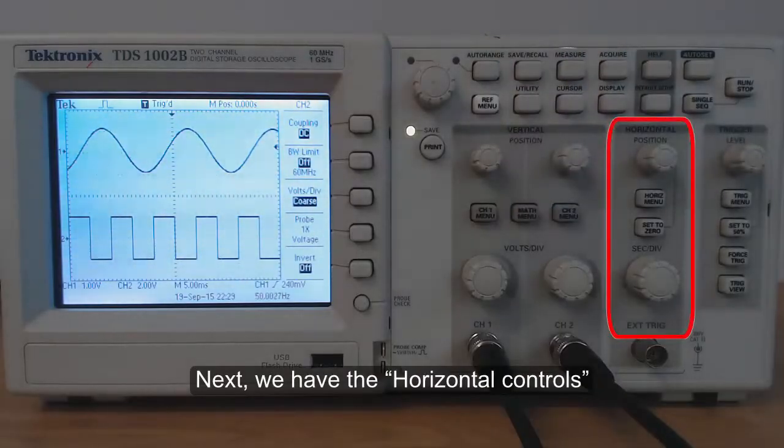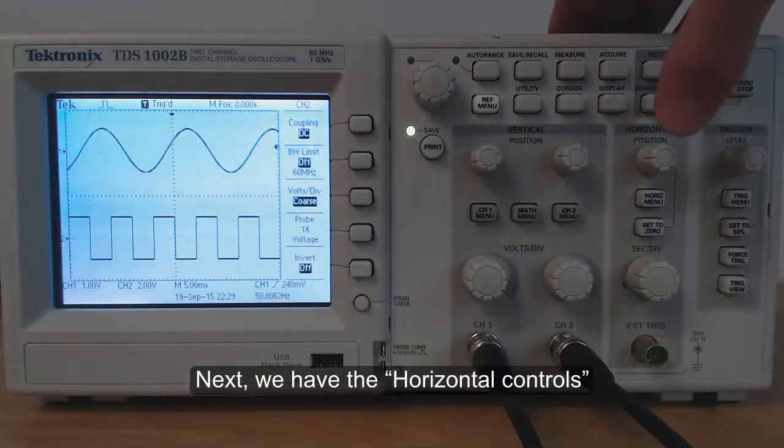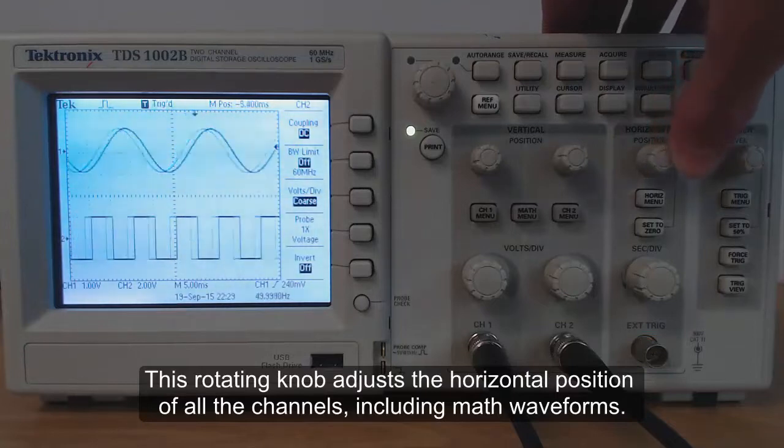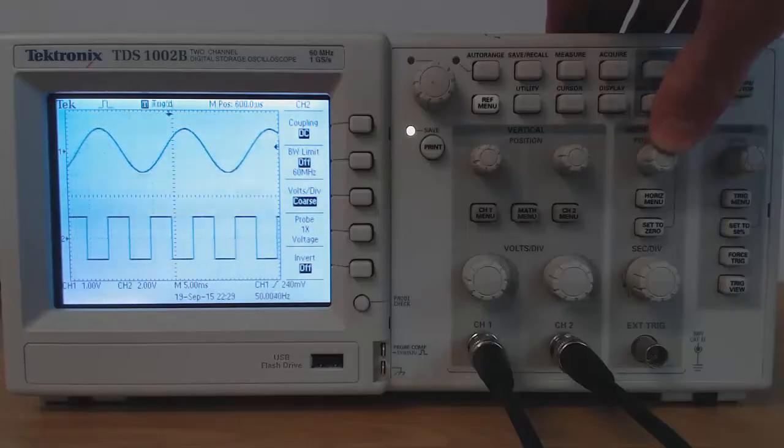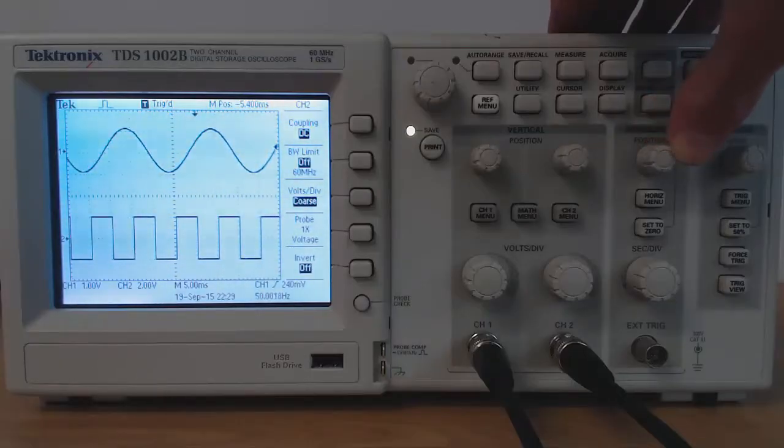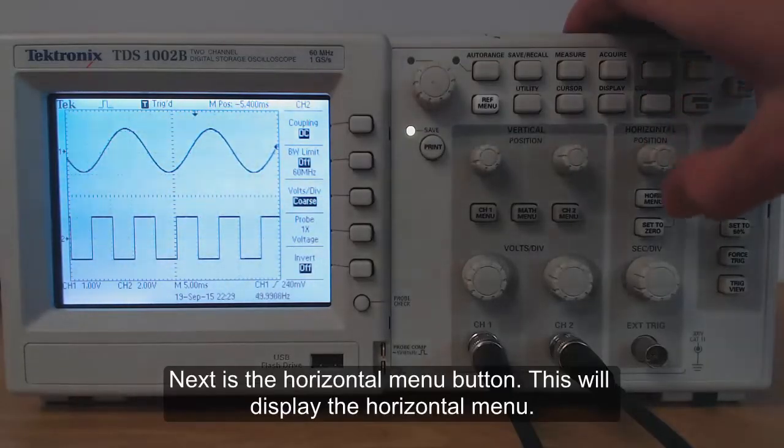Next we have the horizontal controls. This rotating knob adjusts the horizontal position of all the channels, including the MAF waveforms. Next is the horizontal menu button.